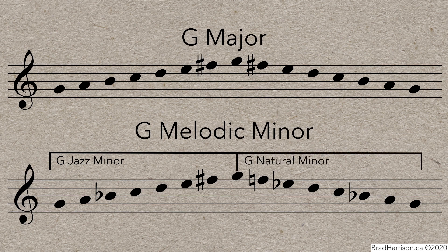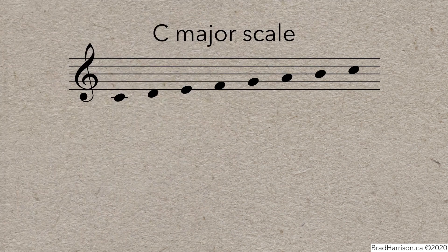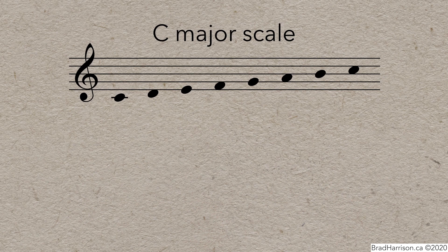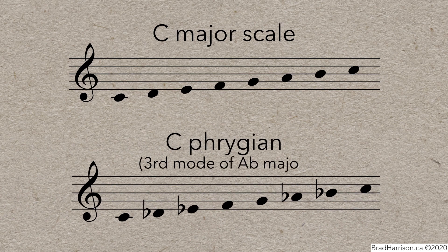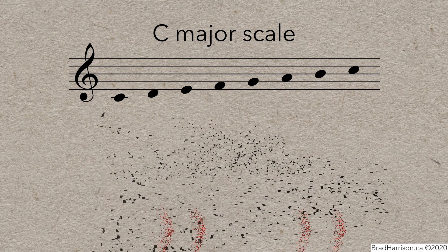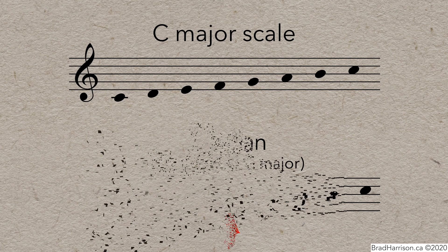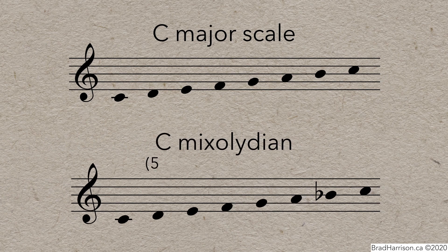We can use similar rules to transform a major scale into any mode as well. A C Dorian scale is the 2nd mode of Bb major, but you could also think of it as C major with a lowered 3rd and 7th. A C Phrygian scale is the 3rd mode of Ab major, or you could think of it as C major with a lowered 2nd, 3rd, 6th, and 7th. C Lydian is the 4th mode of G major, but it's also just C major with a raised 4th. And C Mixolydian, the 5th mode of F major, is just C major with a lowered 7th.